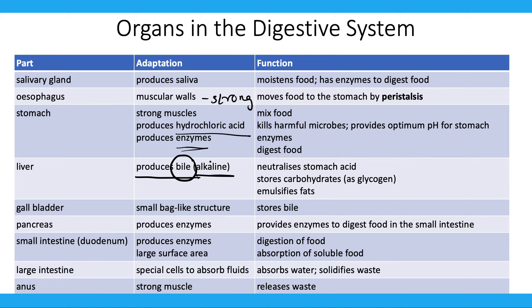The pancreas produces enzymes and provides them to digest food in the small intestine. The small intestine produces enzymes, has a large surface area, and is responsible for digestion and absorption of soluble food. The large intestine has special cells to absorb water and solidifies waste. The anus is a strong muscle which releases the waste. These are all the organs the digestive system contains, along with their adaptations and functions.